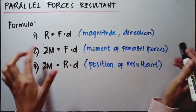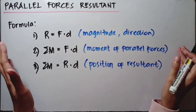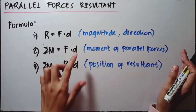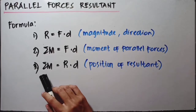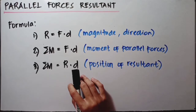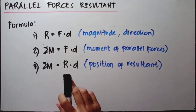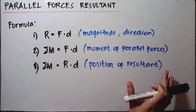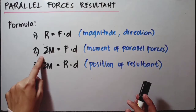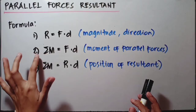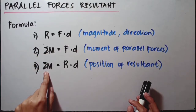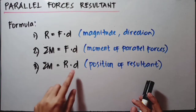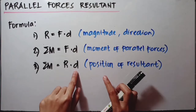We'll solve the moment of all parallel forces in the given problem — each force times its moment arm. For the third formula, summation of moments equals R times the distance. We use this to find the position of the resultant — where it is located on a certain structure, for example a beam. Since the summation of moments of all parallel forces is known from formula 2, and R is known from formula 1, the unknown here is D — the position of the resultant.